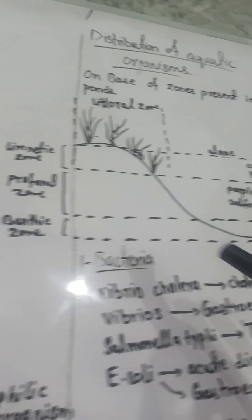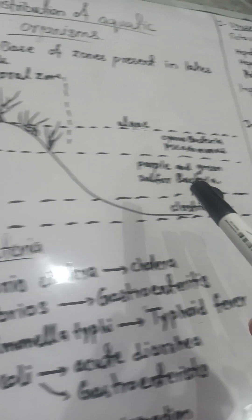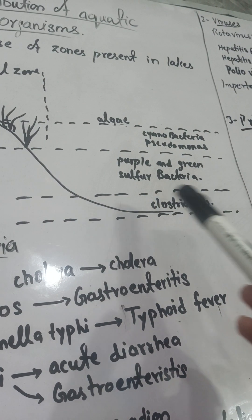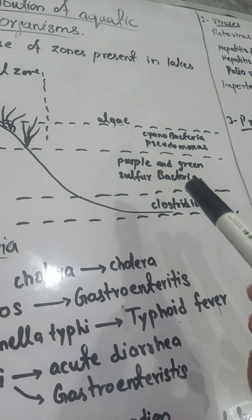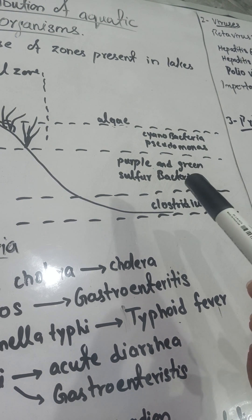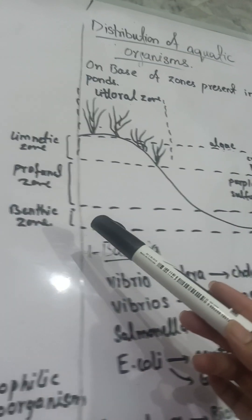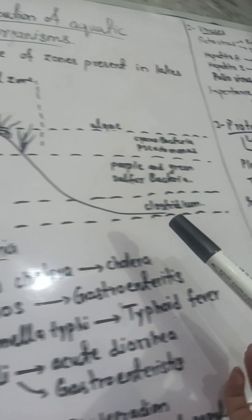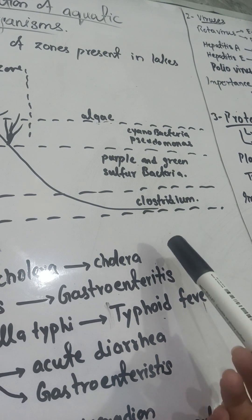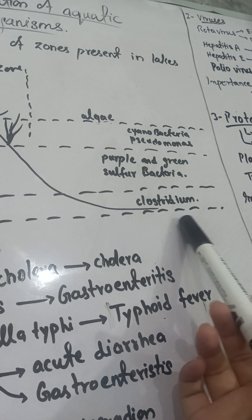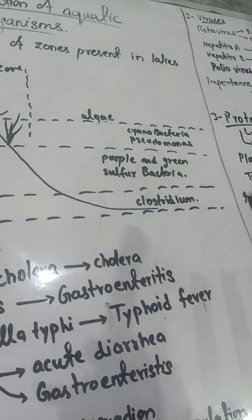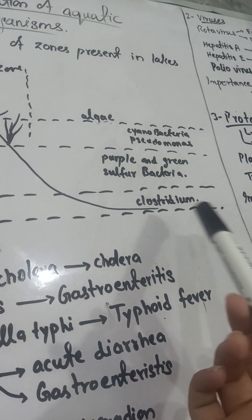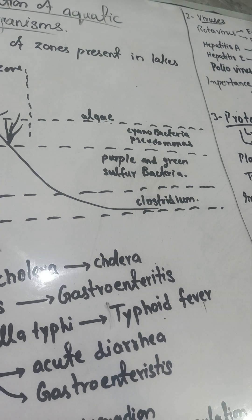The third zone is the profunda zone, where purple and green sulfur bacteria are present. They are also phototrophic and need a moderate amount of sunlight. The last zone is the benthic zone, where various decomposers are present — including species of Clostridium — which decompose dead plants and animals present there.